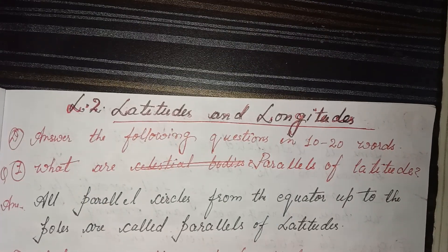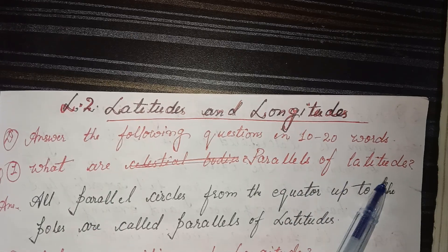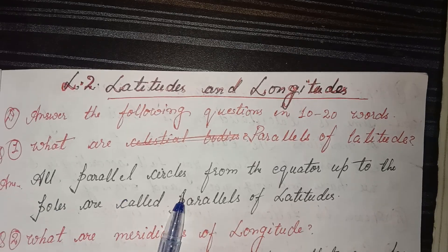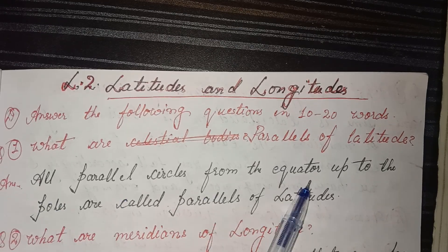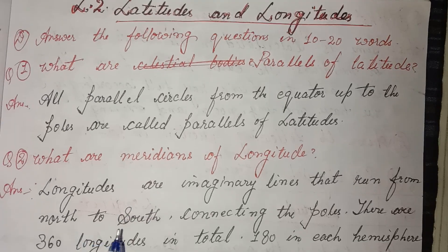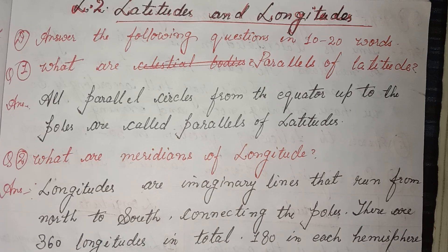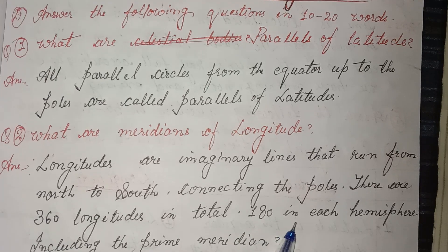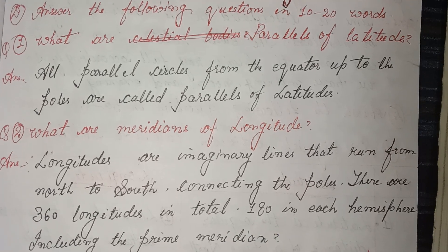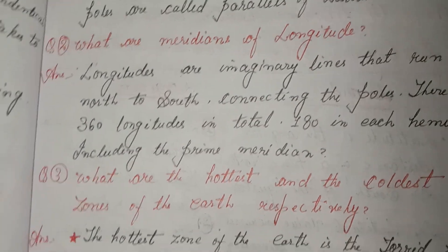Now, long question and answers in the notebook. Chapter 2: Latitudes and Longitudes. Answer the following questions in 10 to 20 words. First: what are parallels of latitudes? Answer: all parallel circles from the equator up to the poles are called parallels of latitudes. Second: what are meridians of longitudes? Answer: longitudes are imaginary lines that run from north to south connecting the poles. There are 360 longitudes in total, 180 in each hemisphere, including the prime meridian.